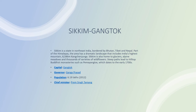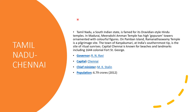The next one is Tamil Nadu, capital Chennai. Tamil Nadu, a South Indian state, is famed for its Dravidian-style Hindu temples. In Madurai, Meenakshi Amman Temple has high Gopuram towers ornamented with colorful figures. On Rameswaram Island, Ramanathaswamy Temple is a pilgrimage site. The town of Kanyakumari at India's southernmost tip is the site of ritual sunrises. The capital Chennai is known for beaches and landmarks including the 1644 Colonial Fort St. George. Governor R.N. Ravi, capital Chennai, Chief Minister M.K. Stalin, population 6.79 crores in 2012.